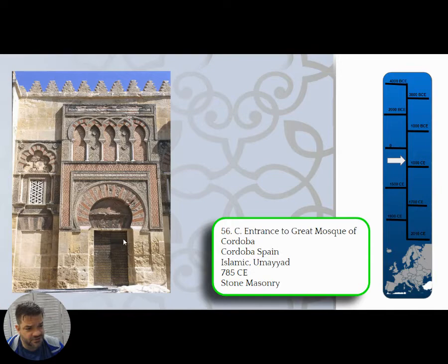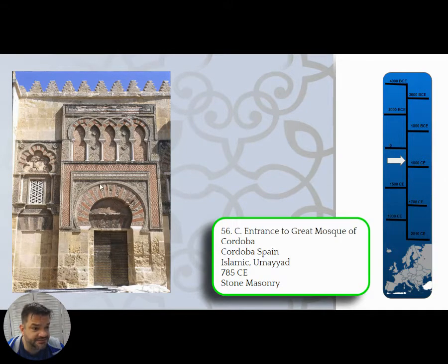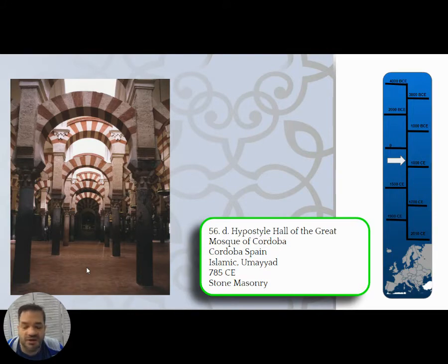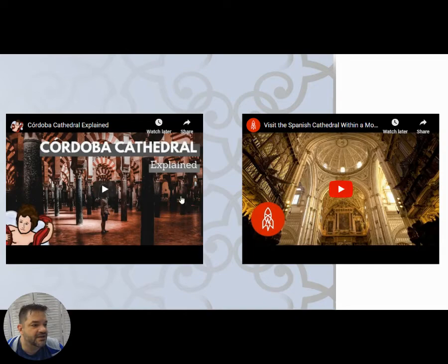The horseshoe arch and the multicolored banding incorporate arabesque as well as script. Inside, the hypostyle hall is this endless room of columns — a forest — where you just get lost in the multiplicity of forms. It's really remarkable.